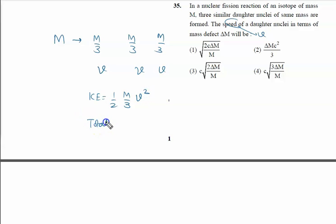The total kinetic energy we will calculate because there are three identical bodies. So three into half into M by three into V square, we will calculate it is half M V square.